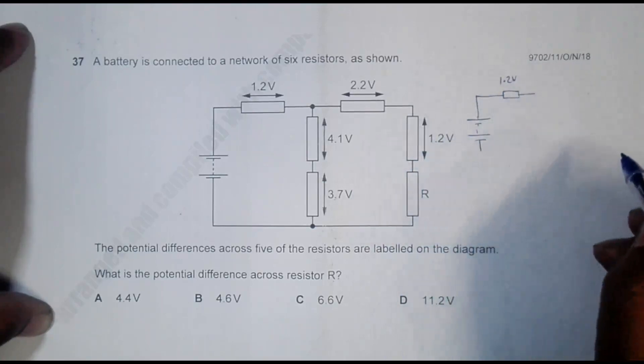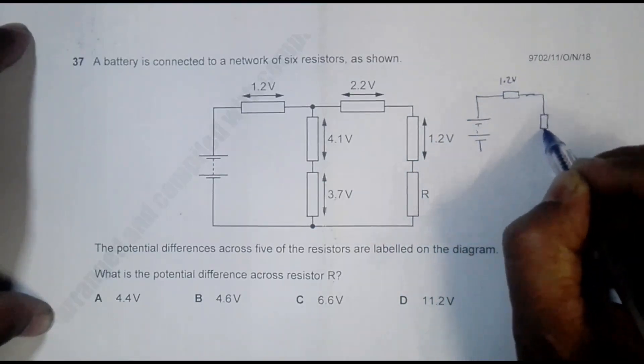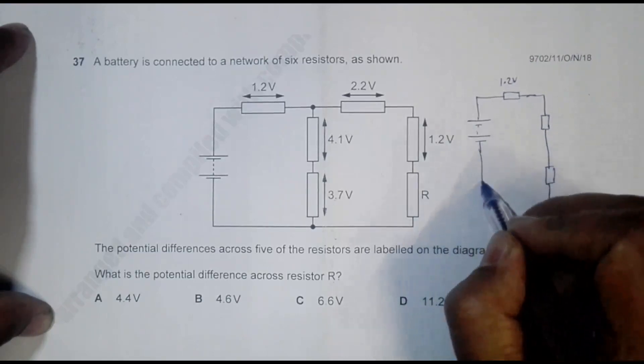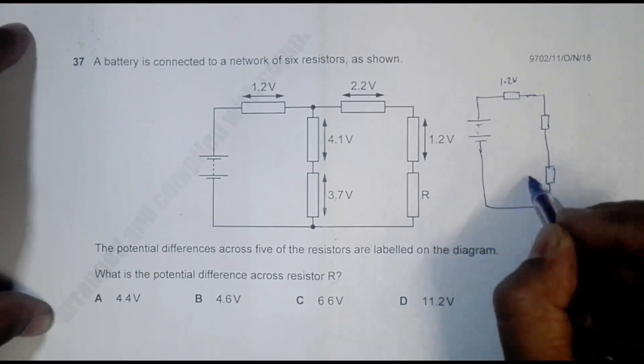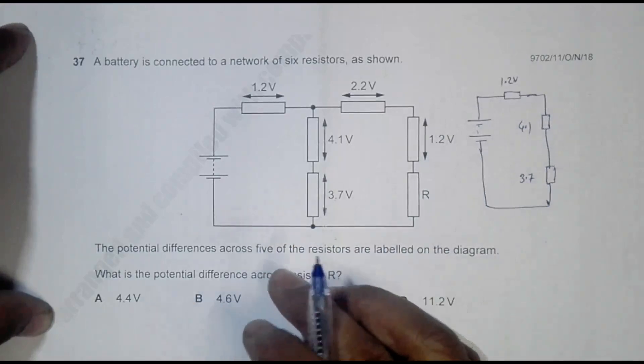So this is one branch. Another branch has this resistor with 3.7 volt, it has got 4.1 volt. Now what I can do to the other branch...